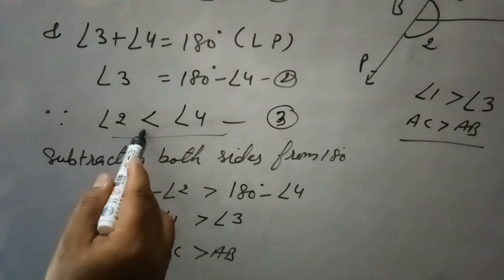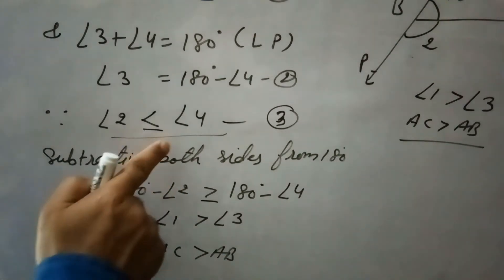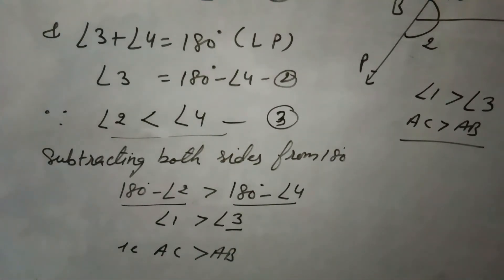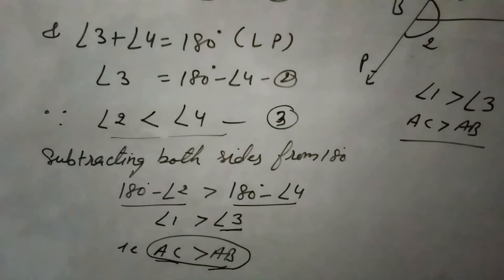So now, 180 minus angle 2 equals angle 1, and 180 minus angle 4 equals angle 3, so angle 1 is greater than angle 3. If we see in the diagram, the side opposite to angle 1 is AC and the side opposite to angle 3 is AB, so AC is greater than AB. This is the result.